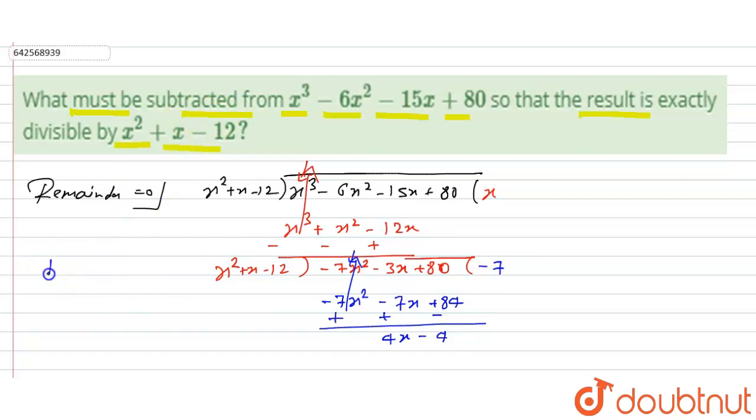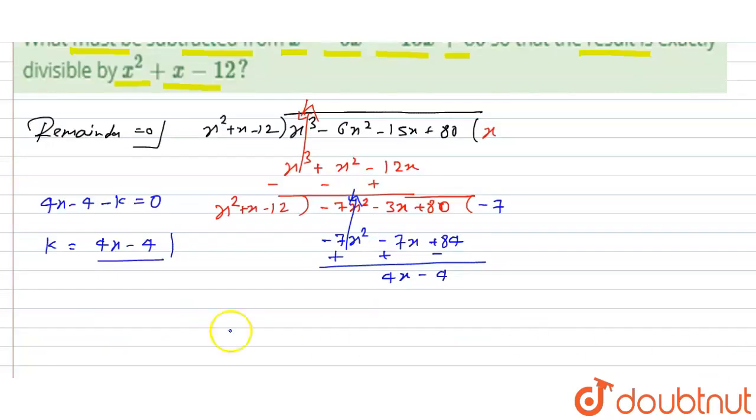Suppose we have to subtract k, so 4x - 4 - k should become zero. That means k equals 4x - 4. So we have to subtract 4x - 4. Hope you understood it, thank you.